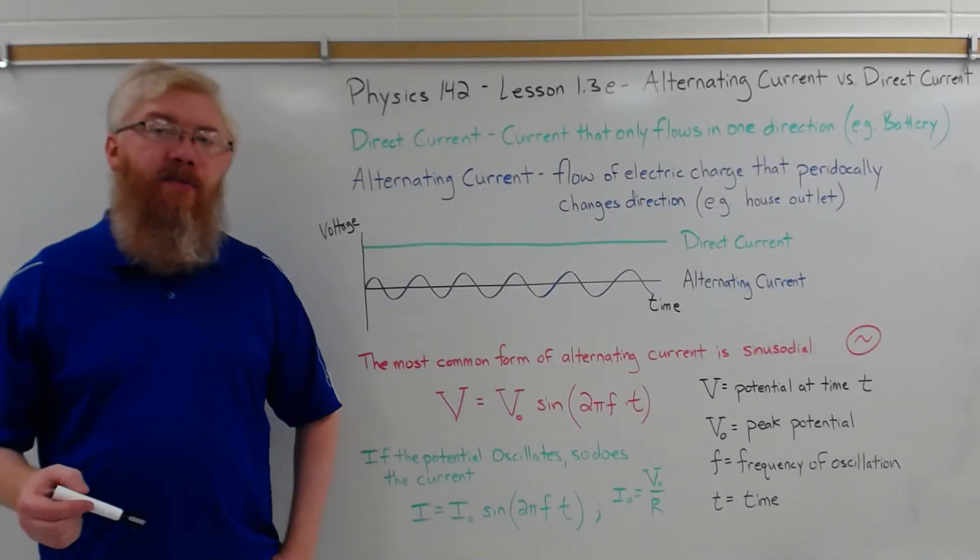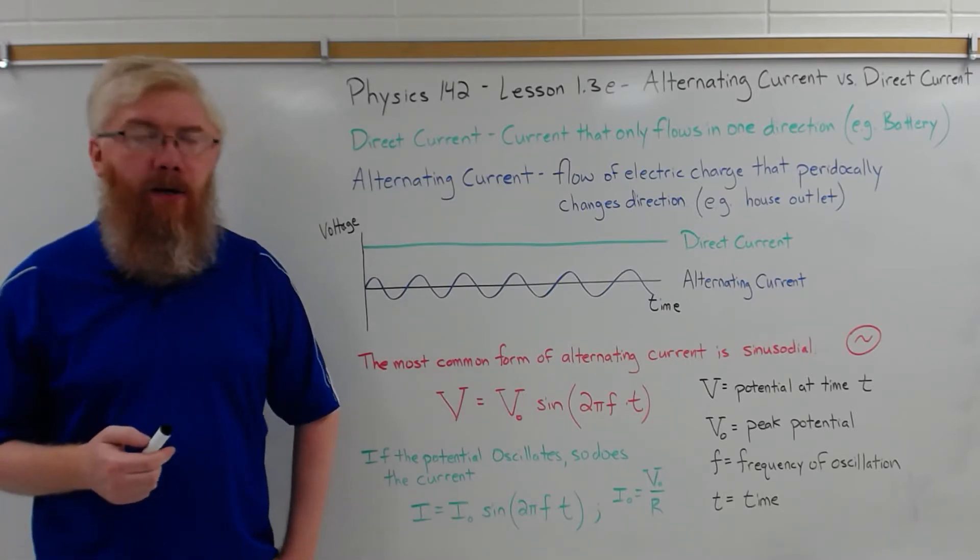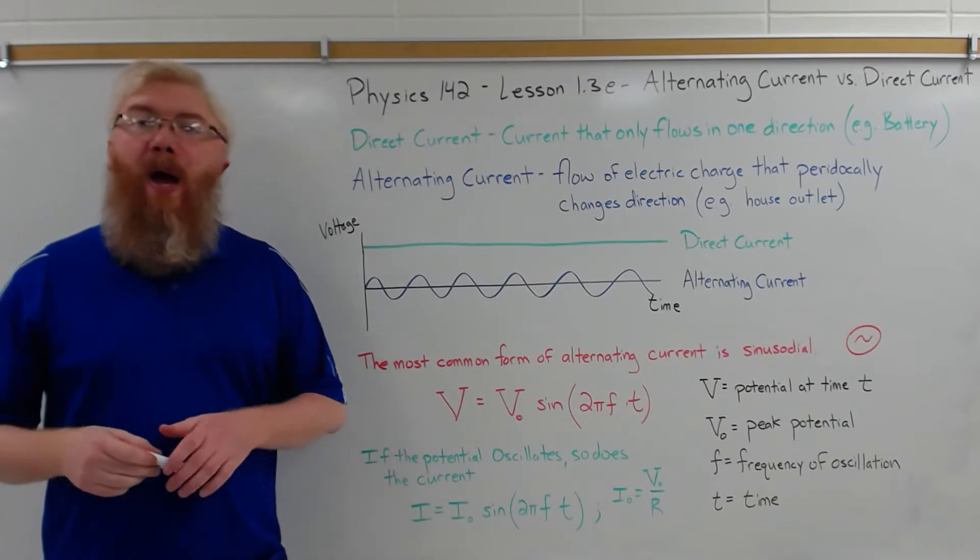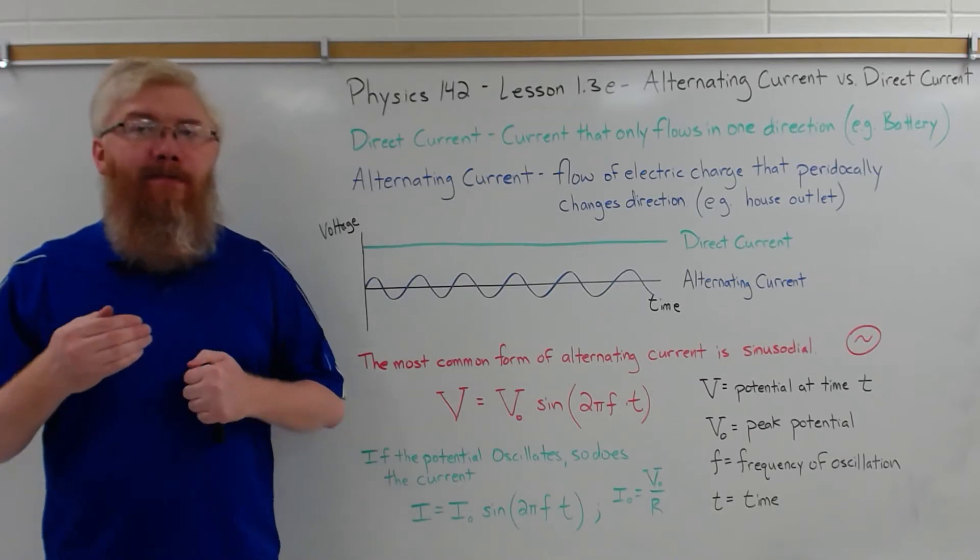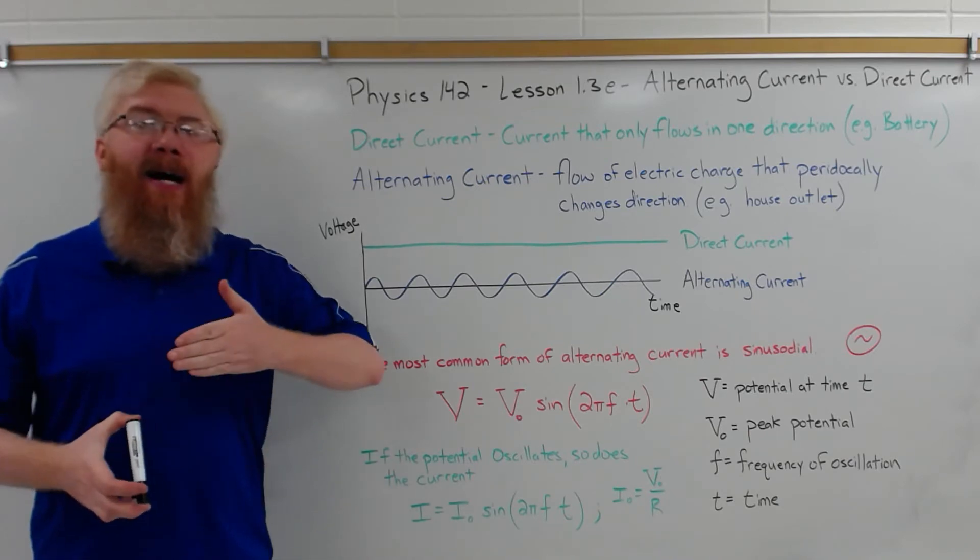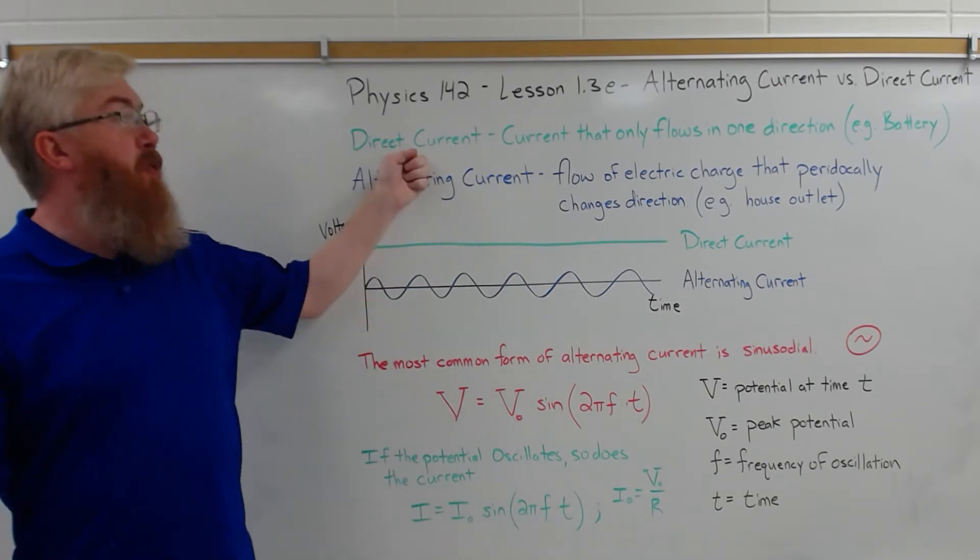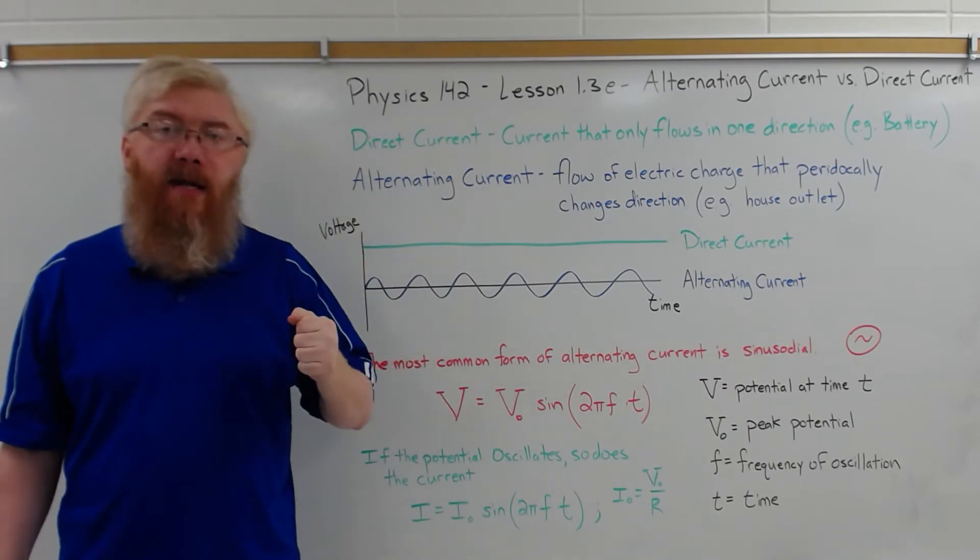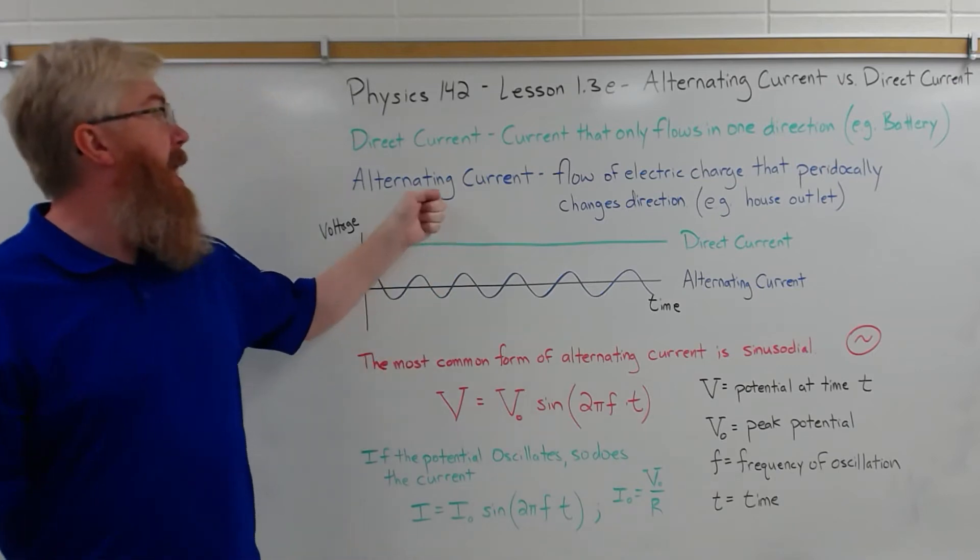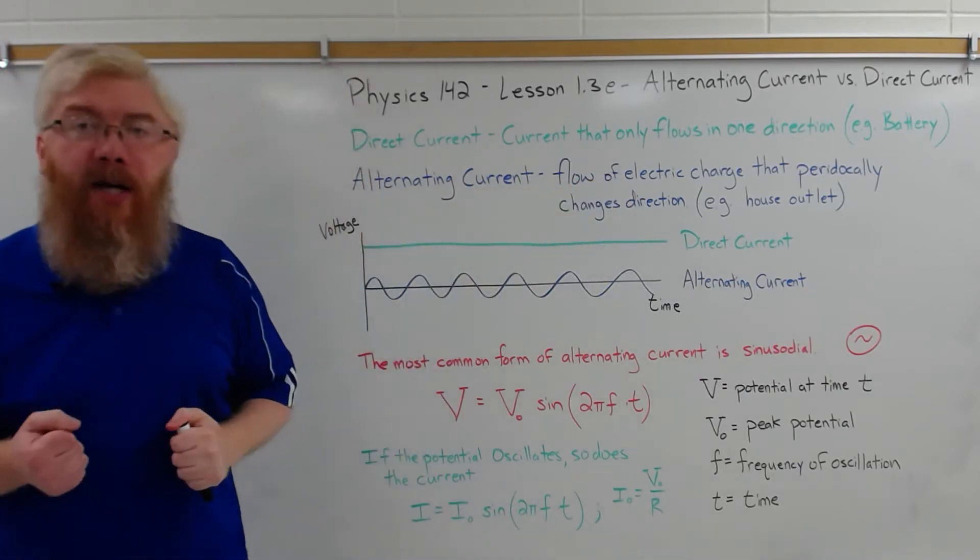We talked briefly about the difference between alternating current and direct current in an earlier video. We're going to formalize it here. When charge flows, when current flows through a circuit, there are two big ways it can do it. You can either have a constant flow in a single direction of current, which we call direct current. Think of it like water in a tube where the water is constantly flowing in the same direction. Or you can have the current oscillating back and forth, called alternating current, where the flow of electric charge periodically changes direction.